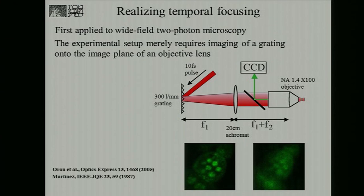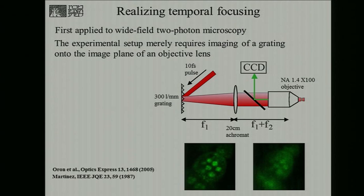The setup to perform this is surprisingly simple. It's a variation on the 4F grating compressor introduced by Oscar Martinez over 25 years ago, and basically includes a diffraction grating imaged using a tube lens and a microscope objective into the sample — essentially a modified 4F system. An ultrashort pulse impinging upon the grating at an angle is split so that each constituent color is diffracted toward a slightly different direction, goes into the sample at a slightly different angle, and this leads to dispersion of geometrical origin, which achieves temporal focusing.